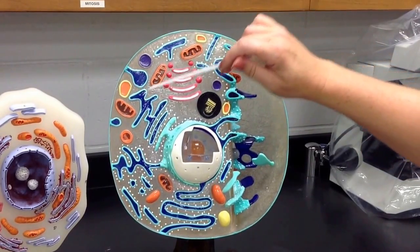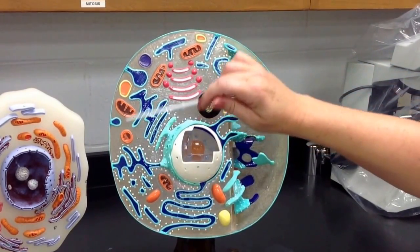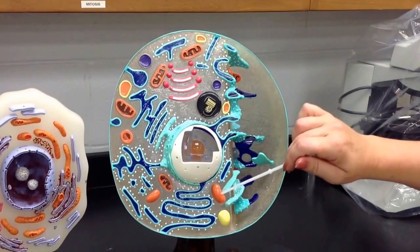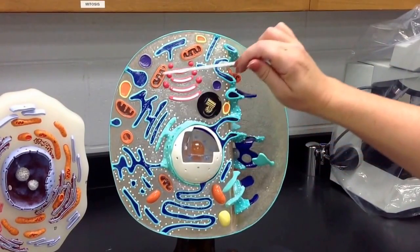These are the mitochondria. All of these are just cut in different views or not cut open at all. So these are all mitochondria.